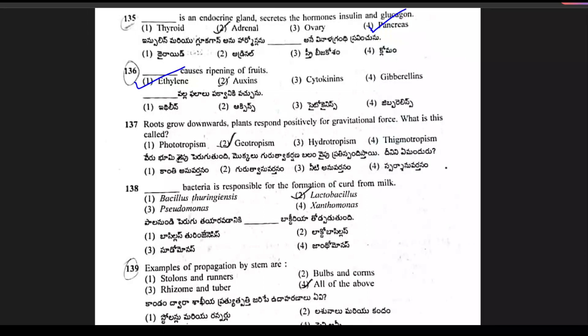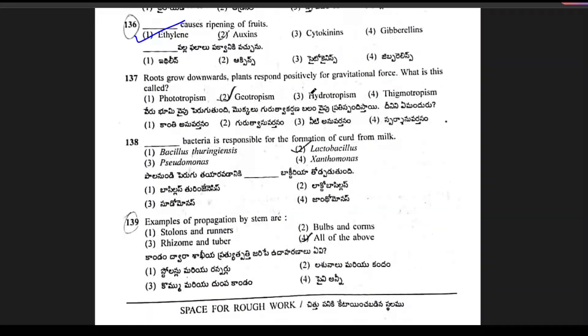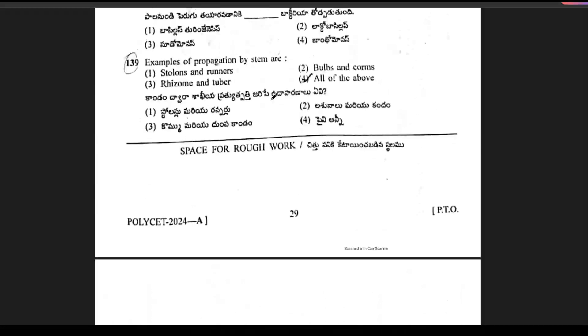Question 137: roots grow downwards — plants respond positively to gravitational force. What is this called? It is nothing but geotropism.